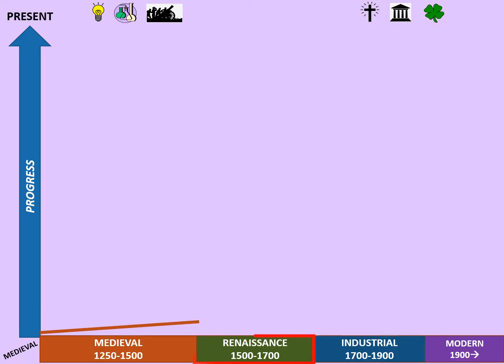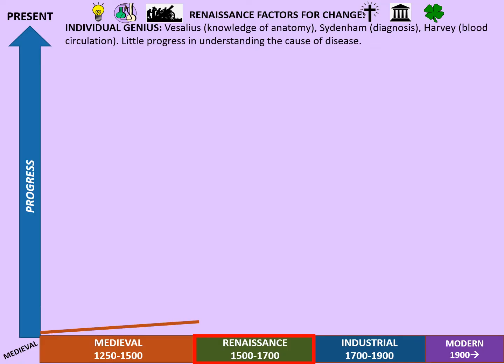Now let's move on to the Renaissance, between roughly 1500 and 1700. Individual genius becomes a lot more important here. We've got Vesalius with his knowledge of anatomy and his book Fabric of the Human Body. We've got Sydenham and his ideas on diagnosis, where one treats the disease underlying the symptoms rather than the symptoms themselves. We've got William Harvey with his ideas on blood circulation, and how many times Galen was proved wrong by all three of them. However, there is little progress in understanding the cause of disease at this time.